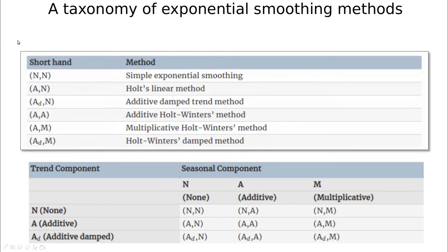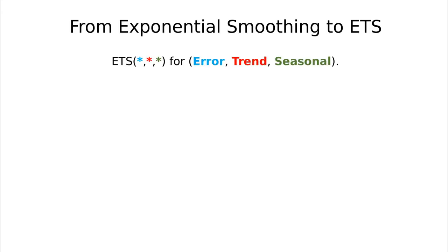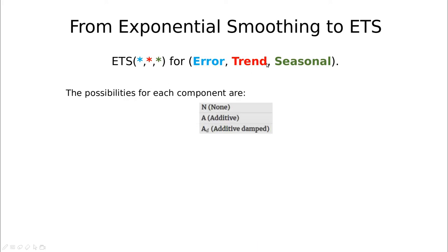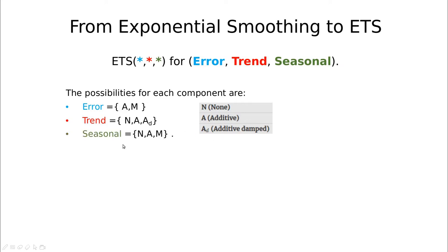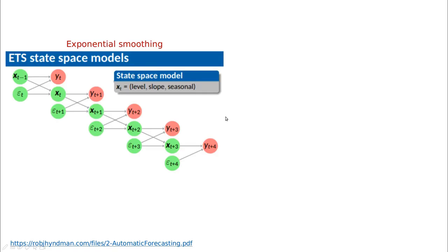Here you have a classification of all the methods covered so far. You can improve these methods by adding more flavor to the error part — that's why you call this sort of method ETS. For each of these parts of the series you can have nothing, an additive part, or an additive damped part. The error can be additive or multiplicative. The trend can be non-additive or additive with some damping, and the same for the seasonal part — non-additive or multiplicative.